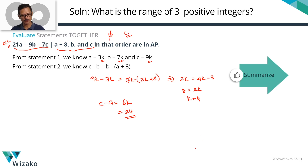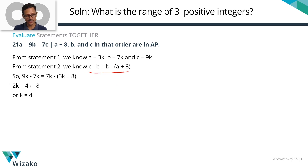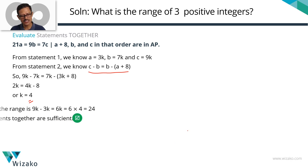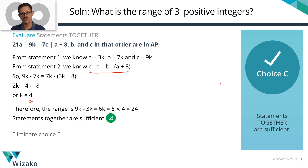To summarize: we replaced A, B, and C with 3K, 7K, and 9K from statement 1, then applied the AP condition from statement 2, and solved for K to get a unique value of 4. Since K is unique, the range = 6K = 24. Combining the two statements, we find a unique answer. Eliminate E — choice C is the correct answer.